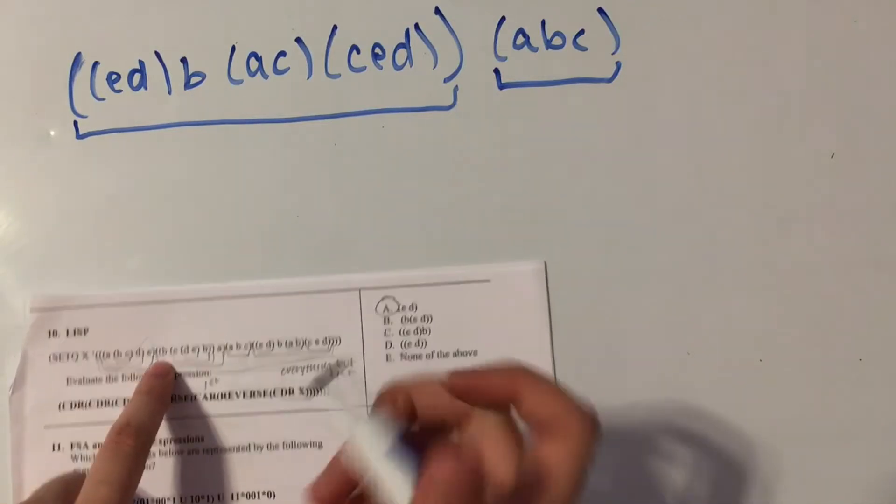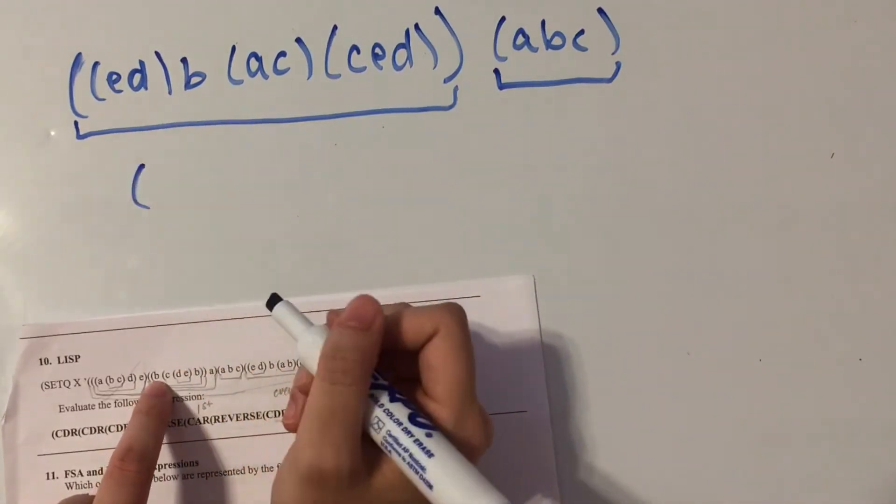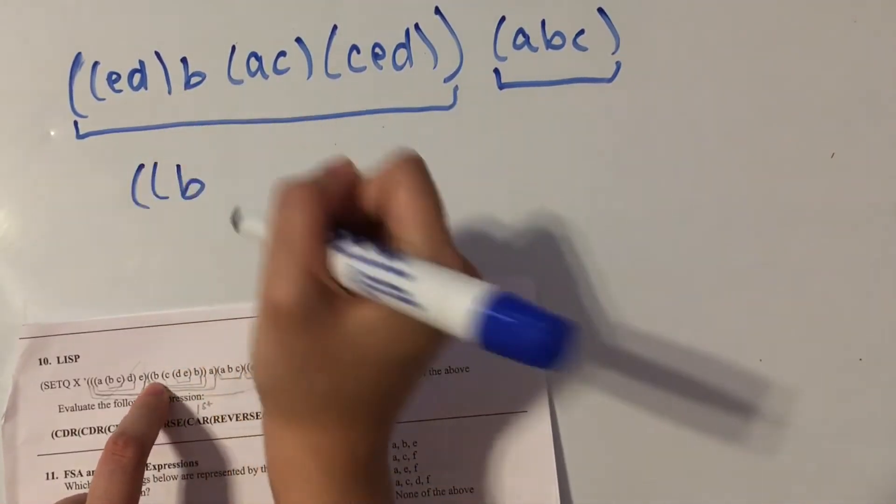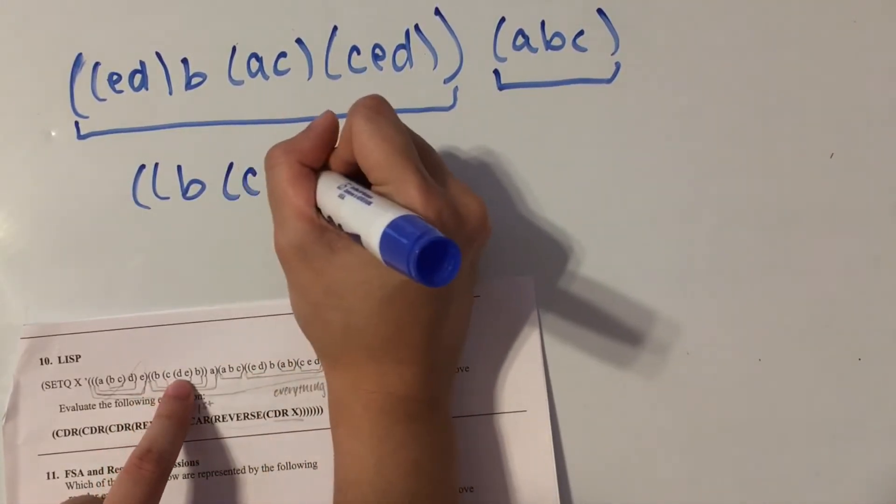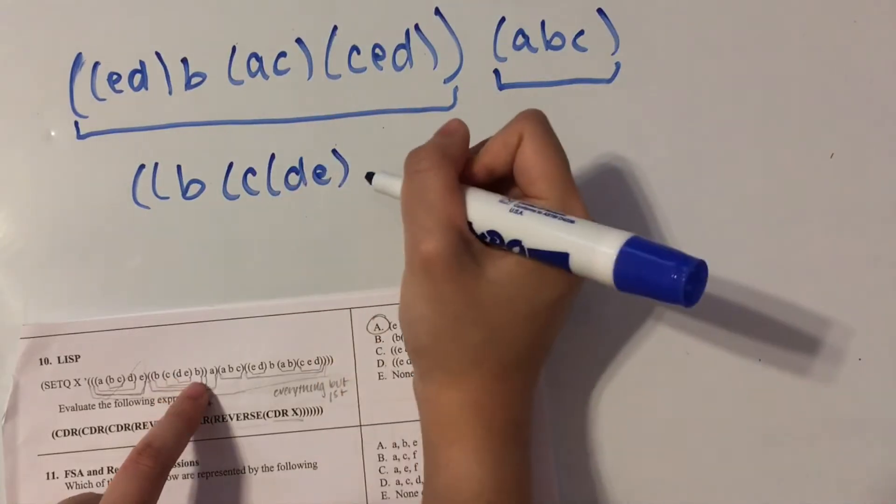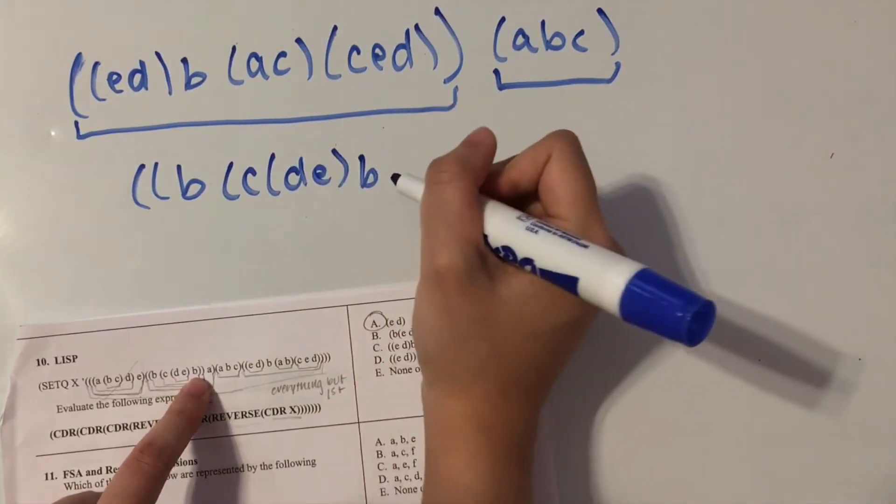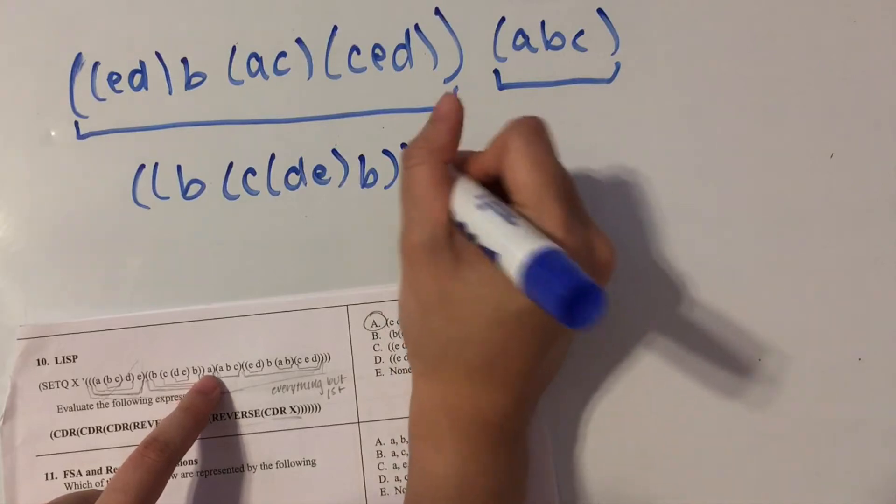And the last one is a list of B, and then we have parentheses C, parentheses DE, and then B. Then we have two parentheses, and then an A.